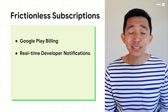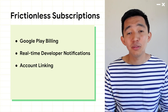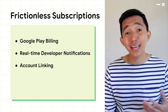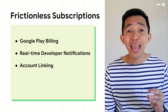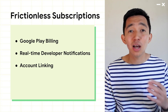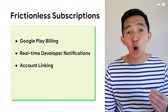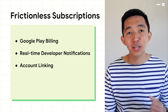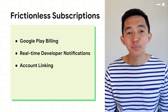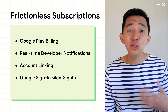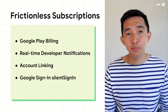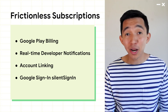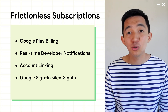Next, the new Streamline Account Linking Flow enables account creation and linking, and it's built on top of existing OAuth account linking integrations. Finally, you'll need to use Google Sign-in's Silent Sign-in API to automatically sign the user in on Android TV.